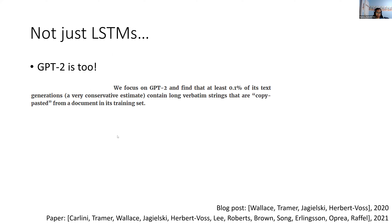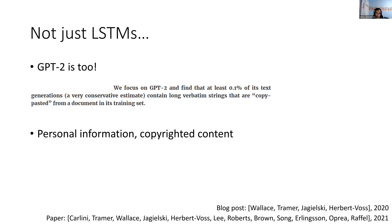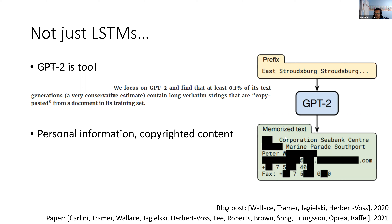Here's a passage from a blog post by some of the authors. They focused on GPT-2 and found similar memorization of training data. In fact, at least 0.1% of its text generations contain long verbatim strings that are copy-pasted from a document in its training set, and this can include things like personal information or copyrighted content. If you give GPT-2 a prefix like 'East Stroudsburg, Stroudsburg,' it will output verbatim someone's personal information — their email address, phone number, fax number, name, etc.